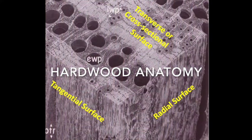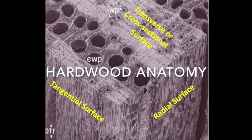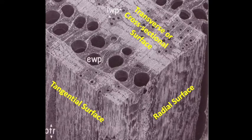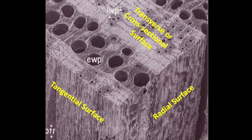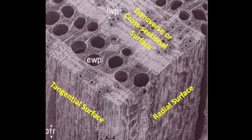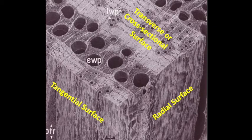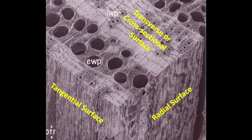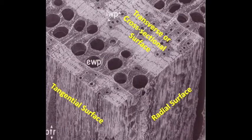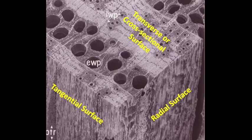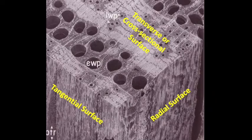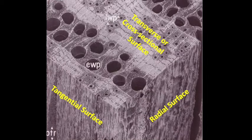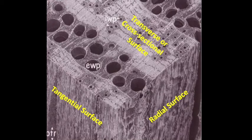And with that segue, now let's move on to hardwood anatomy. As noted, hardwood anatomy is more complex than softwood anatomy and with this short introduction, we have time to only scratch the surface. The orientation of this block of hardwood as viewed in another scanning electron microscope image is a little different than the orientation we saw in the softwood. But note that we still have a cross section and radial and tangential surfaces as shown.